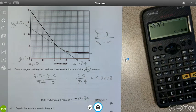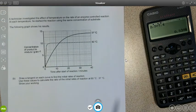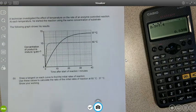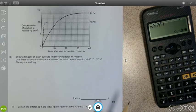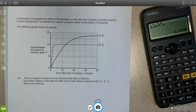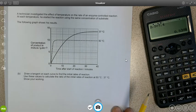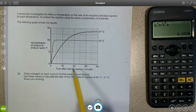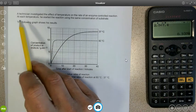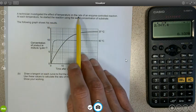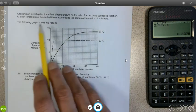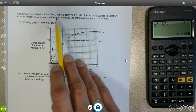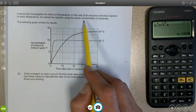One final example, and this one is a little bit more complicated because it involves the calculation of two tangents and then using those tangents to determine a ratio. Here we can see a technician investigated the effect of temperature on the rate of enzyme controlled reaction. At each temperature he started the reaction using the same concentration of the substrate.